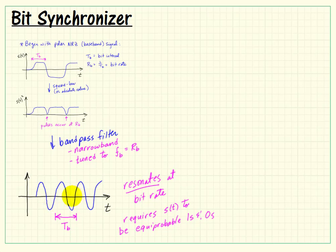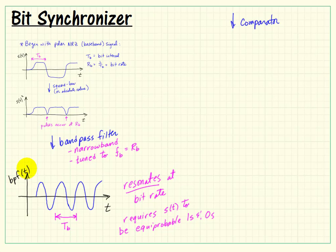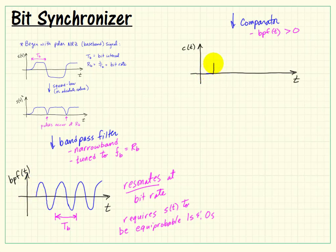Now, we're interested in finding the zero crossings of the bandpass filter output. So let's pass that through a comparator device. I'll consider the bandpass filter output — I'll call that BPF of T — and consider the cases where this is greater than zero. Our comparator output will be positive any time that we see the bandpass filter output being positive. Otherwise, it's simply zero.